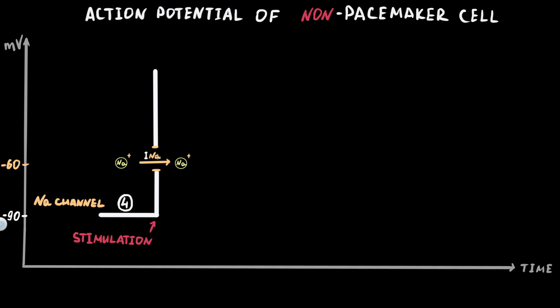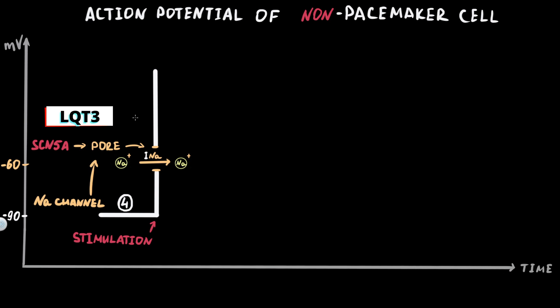Every action potential current is usually marked as the capital letter I and the name of the ion that moves. So the sodium inward current is called I-sodium. One of the most important parts of the sodium channel is the alpha subunit of the channel pore, which is encoded by the gene SCN5A. Gain-of-function mutation of the SCN5A gene leads to Long QT syndrome type III.